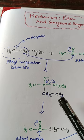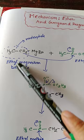In this video I am going to discuss the mechanism of ester and Grignard reagent. So this is ethyl magnesium bromide and this is ethyl acetate.